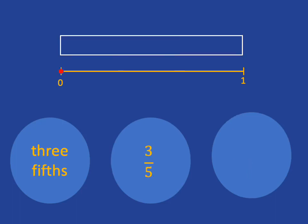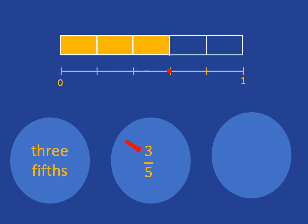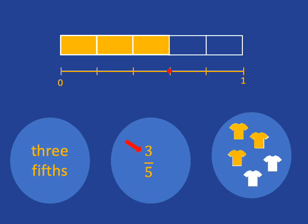And if we have three fifths, the five in the denominator tells us that we need to cut the chocolate bar up into five equal-sized pieces and the length between 0 and 1 up into five equal-sized pieces. The three in the numerator tells us that we want to take one, two, three of those fifths — so we have three fifths of the chocolate bar. And on the number line, we need to travel one, two, three of those fifths lengths to get to the position of three fifths. In terms of our collection, if we had a collection of five t-shirts and three of them were yellow, we could say three fifths of our collection of t-shirts is yellow.